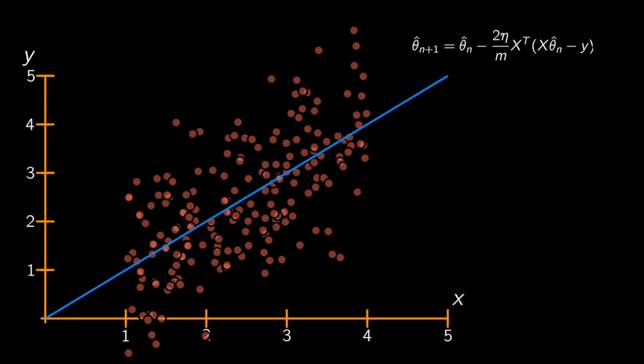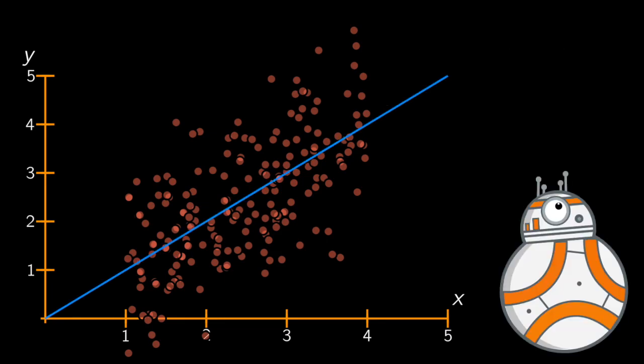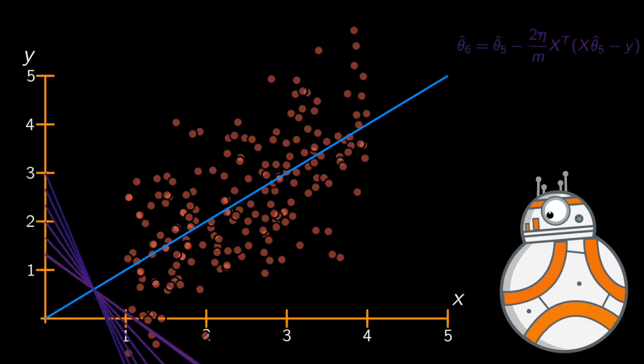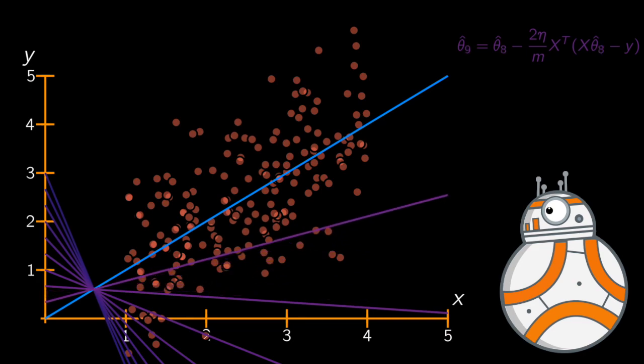Well, say that I start as such, then gradient descent tries to twist or rotate the line so that it approaches the blue line, given a suitable learning rate, right?